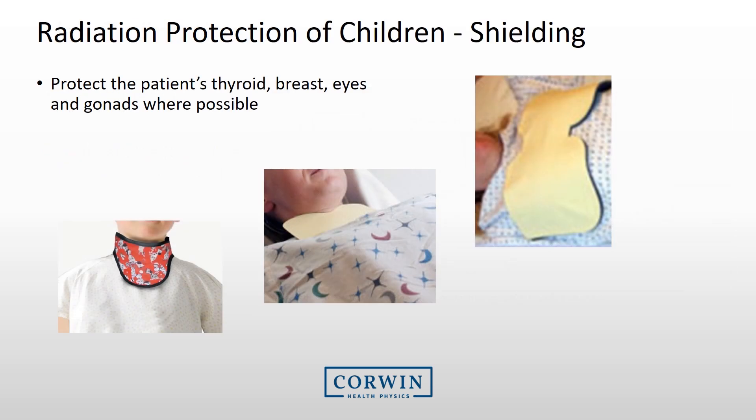When possible, shielding should be used to protect the patient's thyroid, breast, eyes, and gonads. This is especially important when doing procedures on children. Just be sure all shielding is kept out of the primary beam.